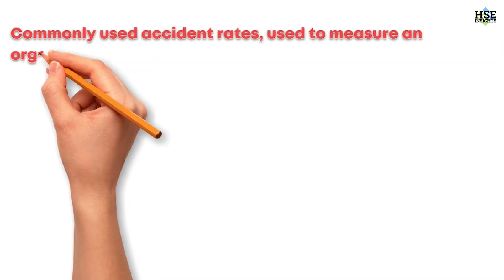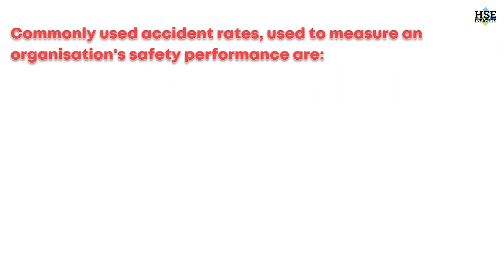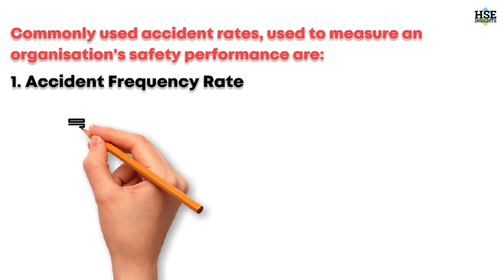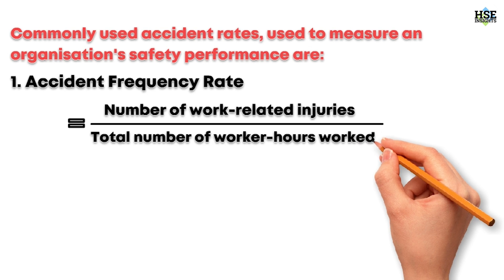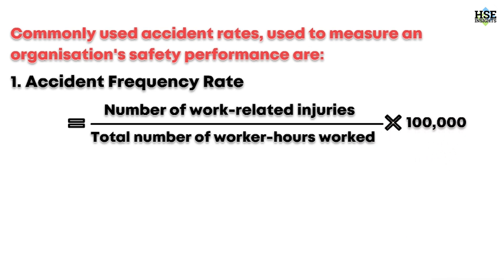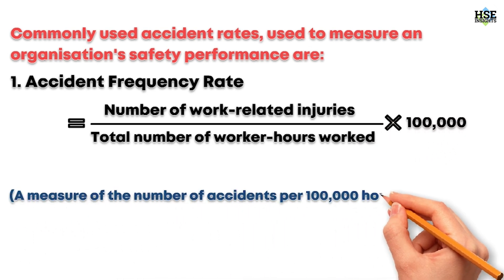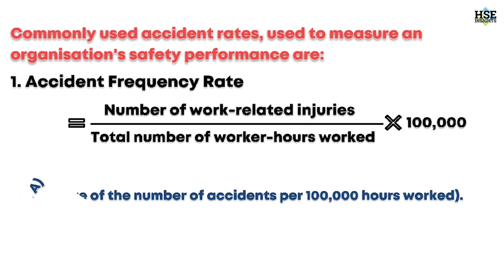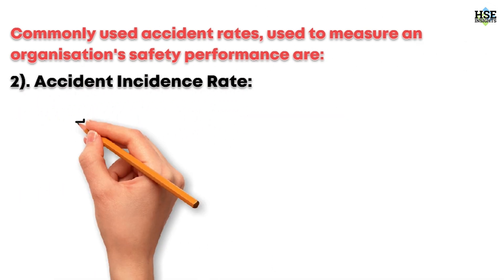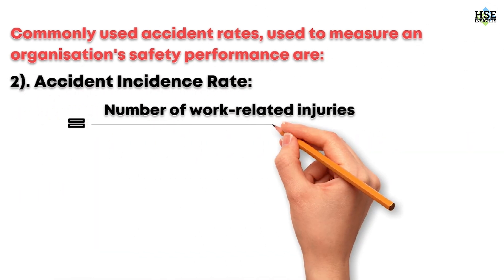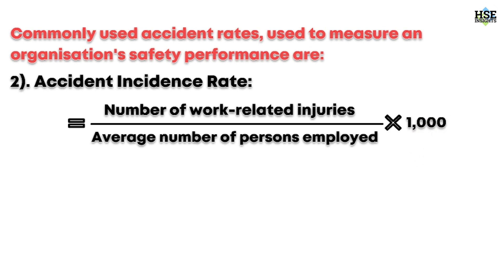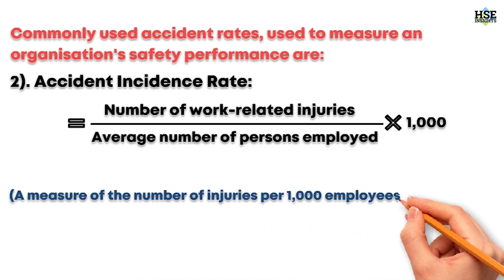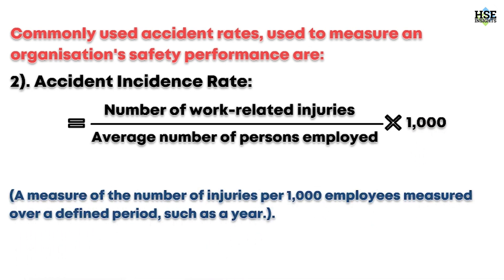Commonly used accident rates to measure an organization's safety performance are: one, accident frequency rate — number of work-related injuries divided by the total number of worker hours worked, multiplied by one hundred thousand — a measure of the number of accidents per hundred thousand hours worked; two, accident incidence rate — number of work-related injuries divided by the average number of persons employed, multiplied by one thousand — a measure of the number of injuries per one thousand employees measured over a defined period such as a year.